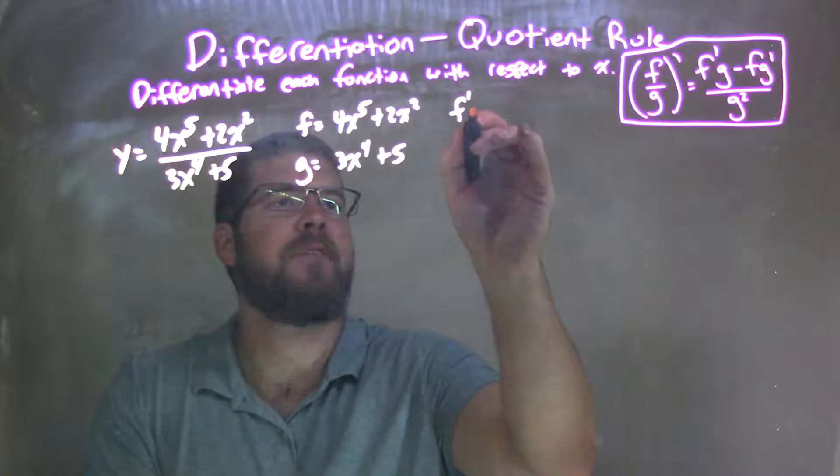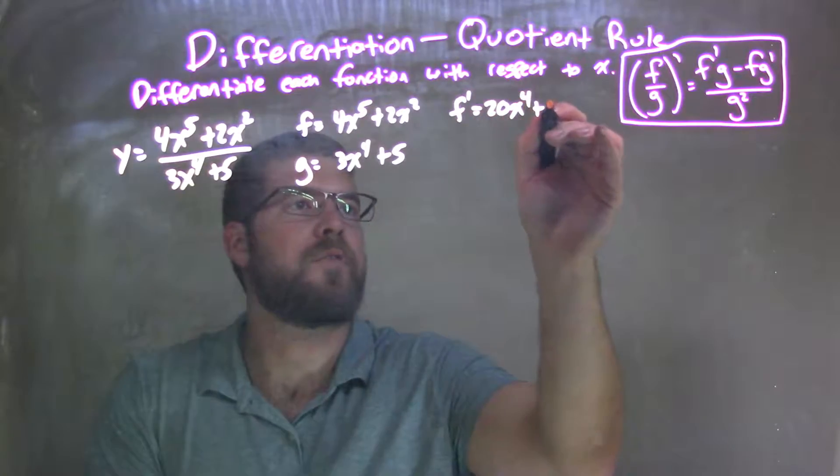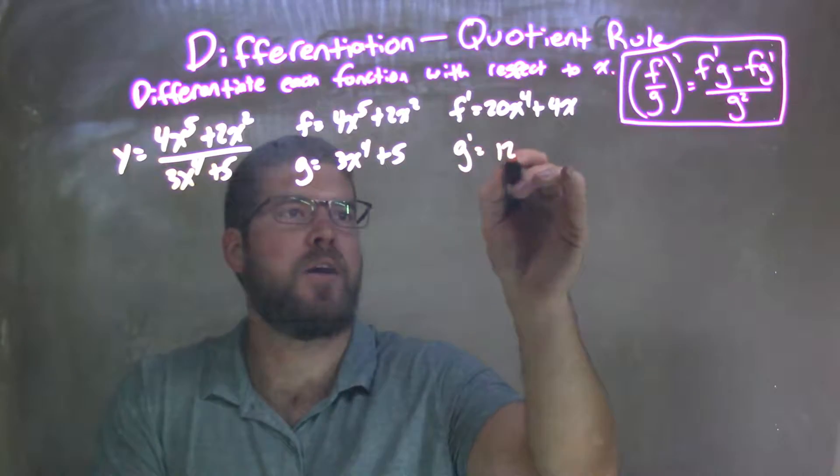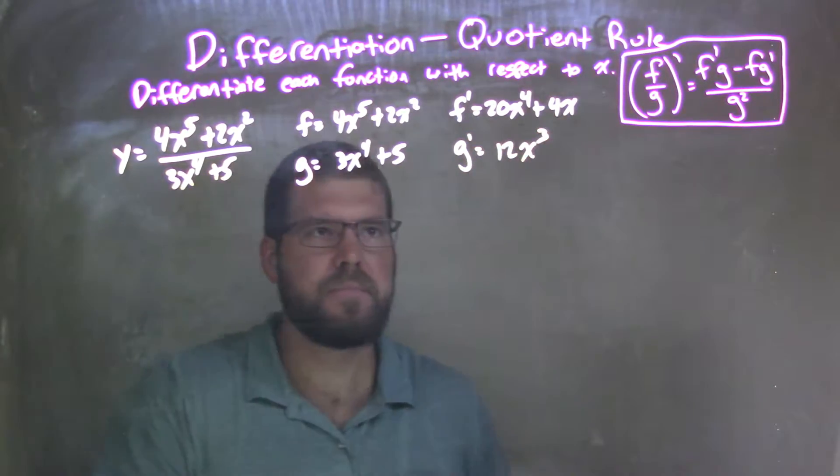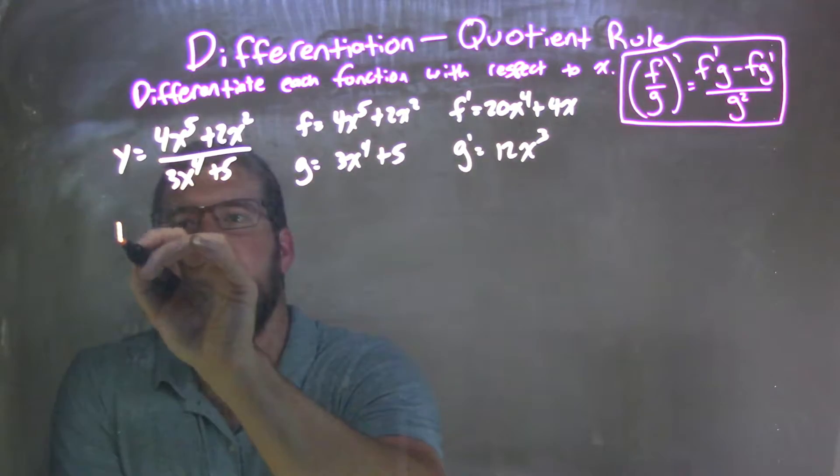So let's go find f prime. f prime is equal to 20x to the fourth plus 4x, and g prime comes out to be just 12x to the third. So now I have f, g, f prime, g prime. Let's apply our quotient rule written right there.